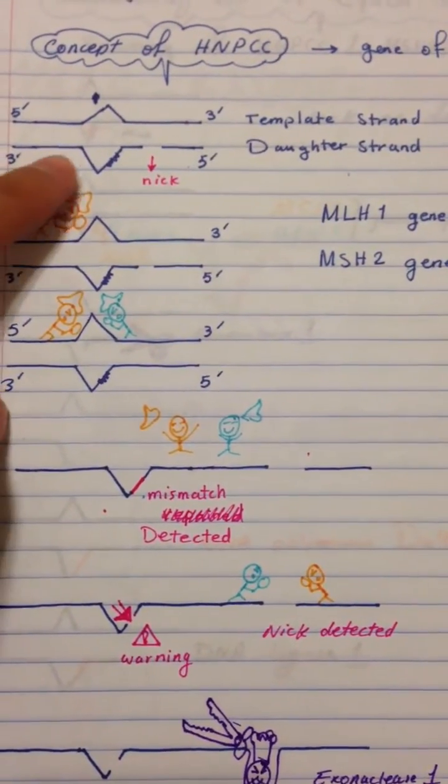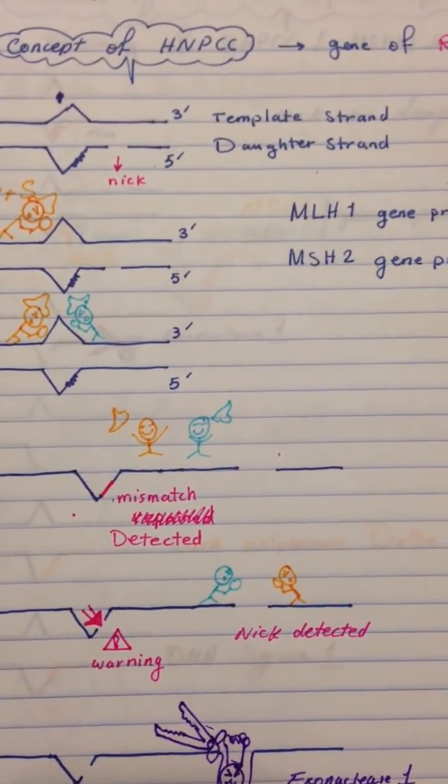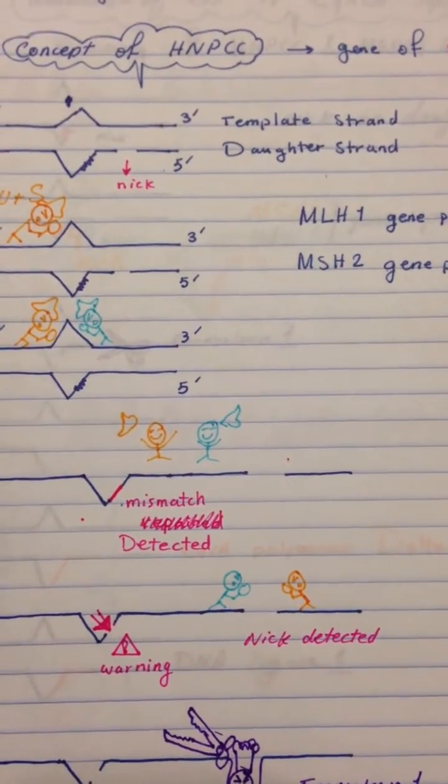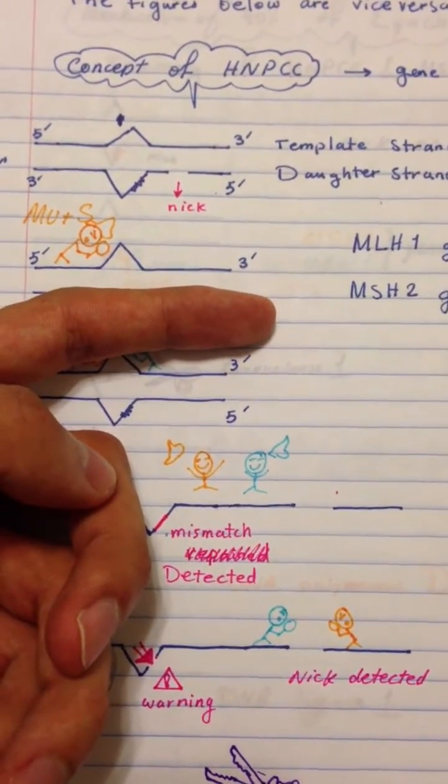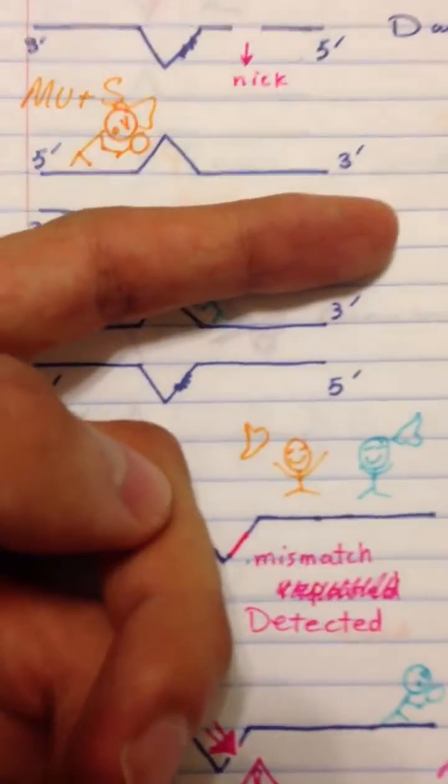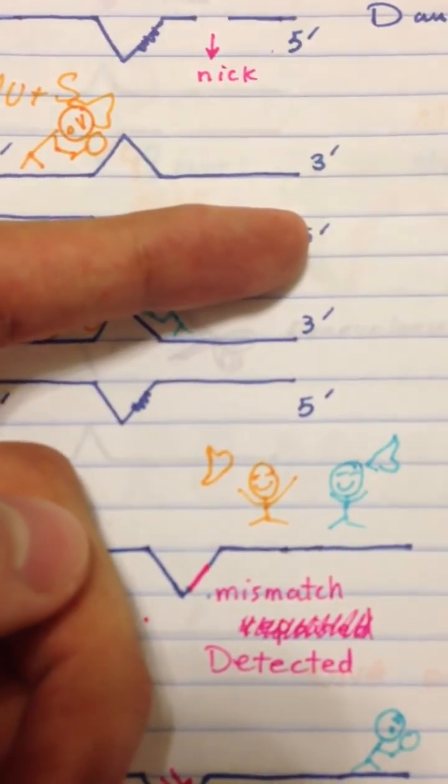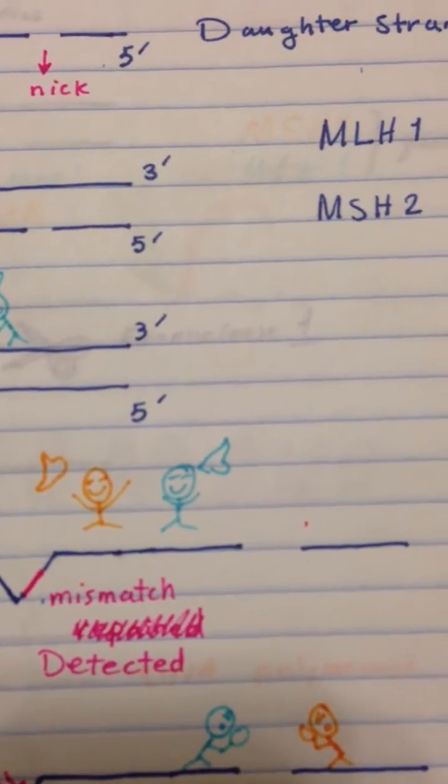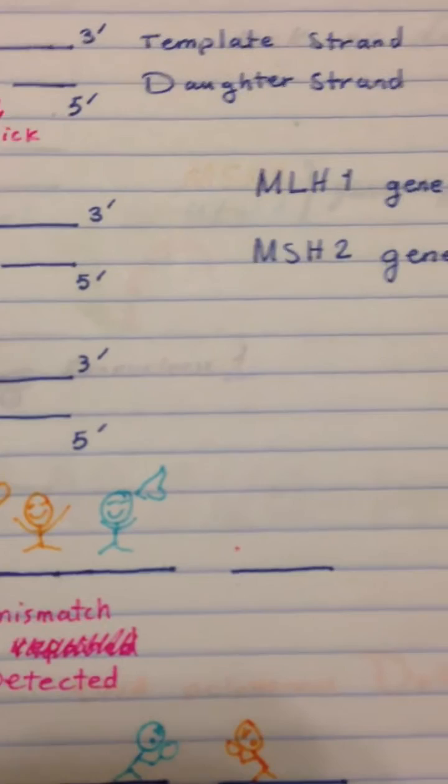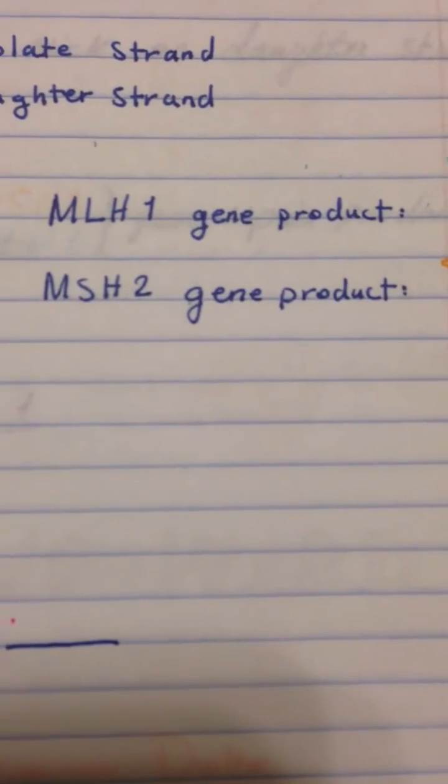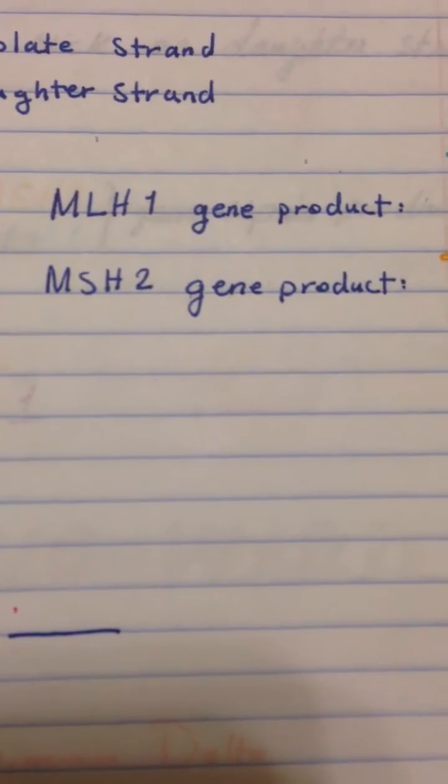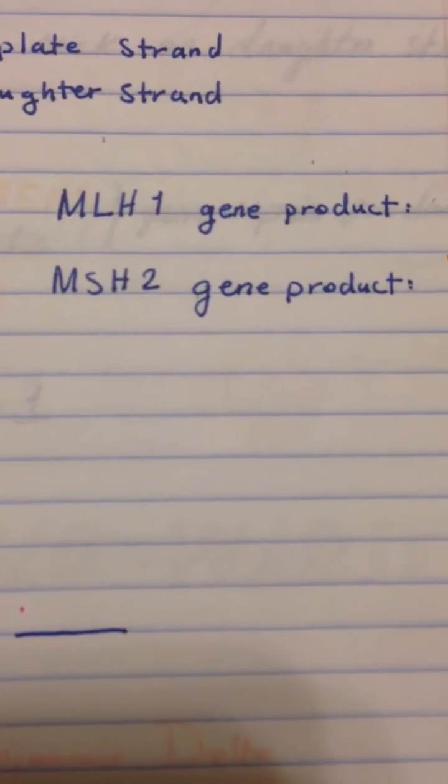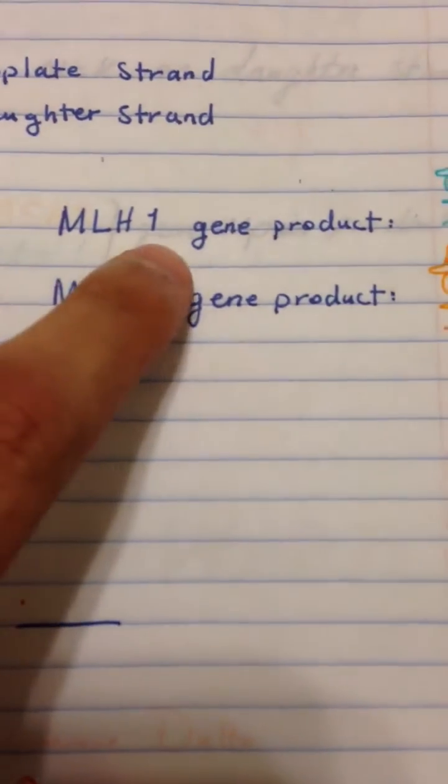...is a mistake in the daughter strand, imagine that here is the daughter strand, now made from 5 prime to 3 prime. We have two genes which are active in HNPCC: one is MLH1 and the other one is MSH2. Each of these genes has a protein product.